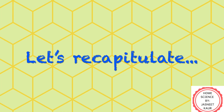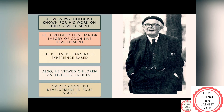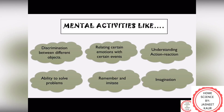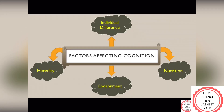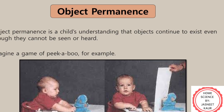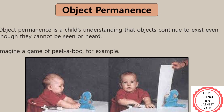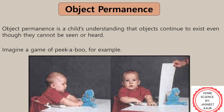Before getting into the topic, let's quickly recapitulate what we have understood in our previous video. We discussed in the first stage that children develop different mental activities and explore their immediate environment through their senses as well as physical capabilities, which help them build awareness of themselves and their surroundings. The most important concept of that stage was Object Permanence. To know more about it, do check out the link in the description box below or click on the top right corner of your screen.